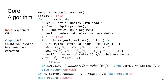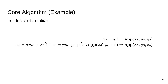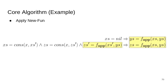Let's go through an example of what this looks like in practice. Considering just the append function's CHC system, the first thing we do is apply the new-fun transformation. For the sake of argument, we've already figured out the output arguments. Then we start to apply equality propagation. The first equality we see is that Xs equals nil, so we substitute nil for Xs.